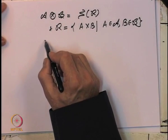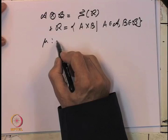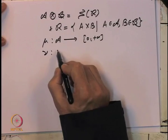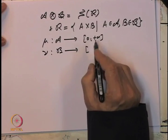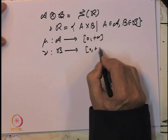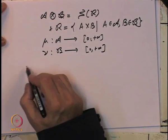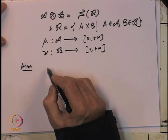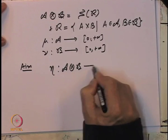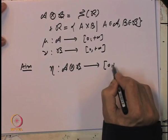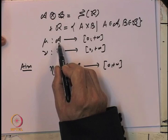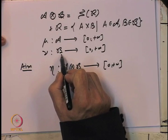We are given a measure μ on the sigma algebra A and a measure ν on the sigma algebra B. Our aim is to define a measure η on the product sigma algebra A⊗B using the measure μ on A and the measure ν on B.